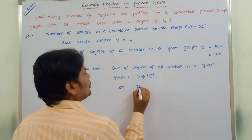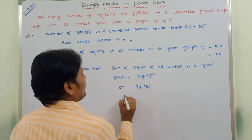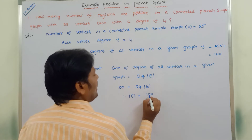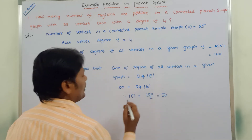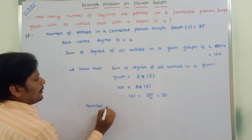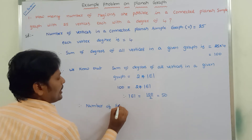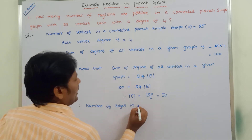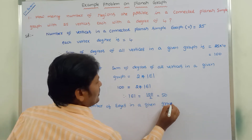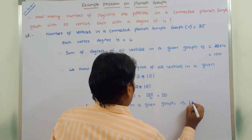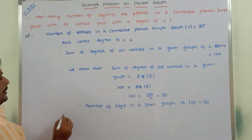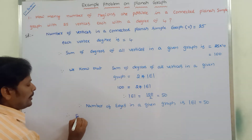So 100 = 2 × |E|, therefore |E| = 100 / 2 = 50. Therefore the number of edges in the given graph is |E| = 50. Next, from Euler's formula, we have to find out the number of regions.